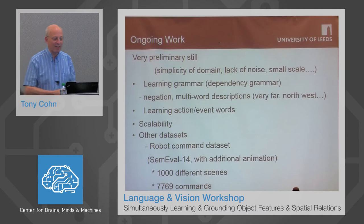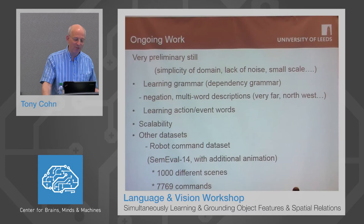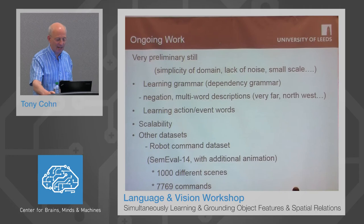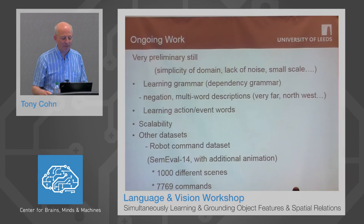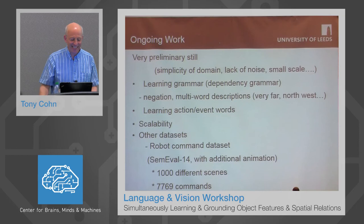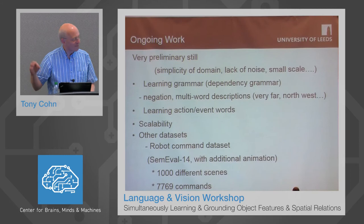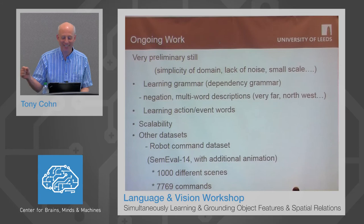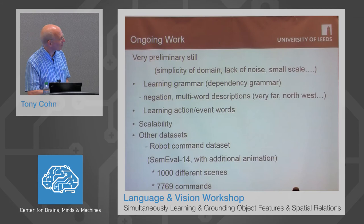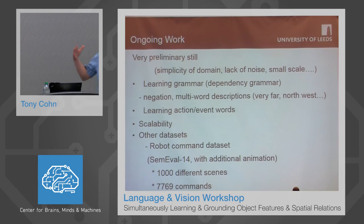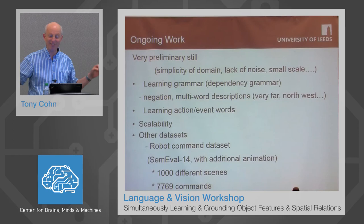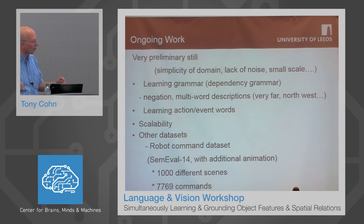As I say, this is ongoing work — still very preliminary. The domain is still pretty simple, there's a lack of noise in the training data, and it's still fairly small scale. We want to be able to deal with real training data rather than just synthetic data, where there's bound to be noise. We'll probably have to learn some kind of grammar — we're looking at using dependency grammar, particularly to handle issues like negation and multi-word descriptions. Very far and top left were actually treated as single tokens, so we need to be able to handle genuine multi-word feature descriptions. We'd also like to learn actions and events — rather than just a static scene, we'd like to take a video with a description and learn not only words and spatial relationships but also events.